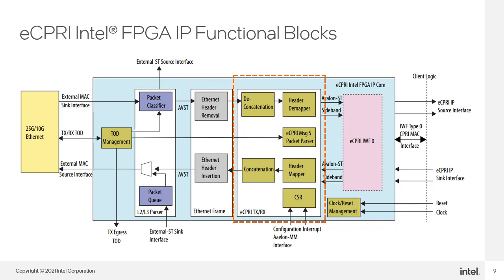The CSR block contains and provides access to all of the configuration registers for the IP core. The special eCPRI message 5 parser block is used to initiate one-way delay measurement calculations. It is used to remove the transport delay from the transmitting side to the receiving side. We'll talk more about this later in the presentation.